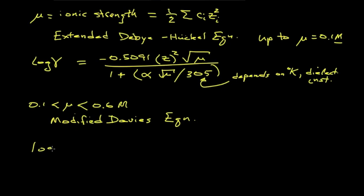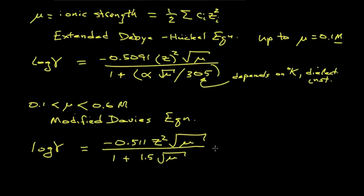That looks quite similar, that the log of our activity coefficient is equal to minus 0.511 times z squared times the square root of mu. But now the denominator is 1 plus 1.5 times the square root of ionic strength. And then there's this extra term 0.2 times z squared times mu.